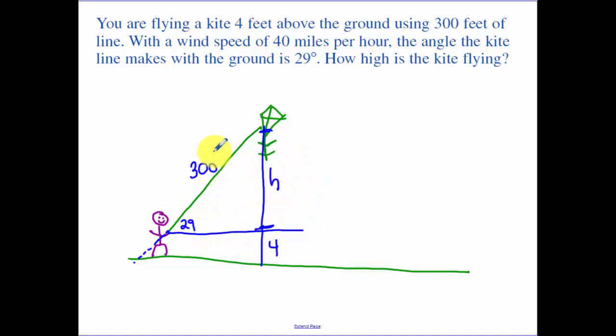Opposite over hypotenuse. So the sine of 29 is equal to H over 300. Multiply both sides by 300. So this is now just a matter of typing this in your calculator. I get 145.44.